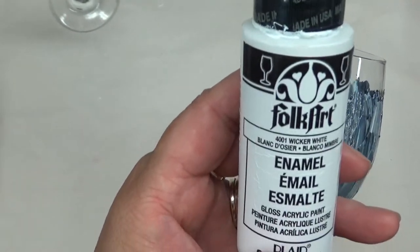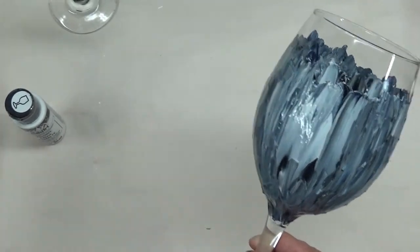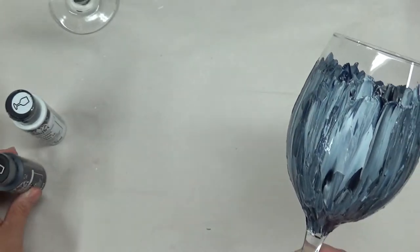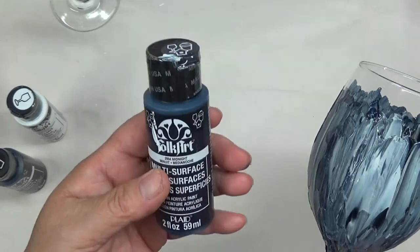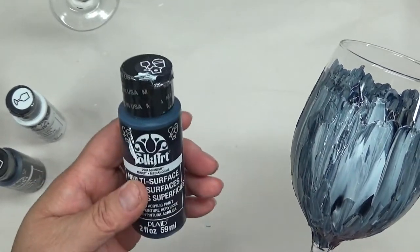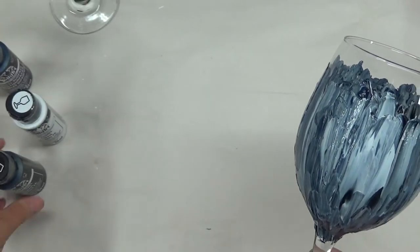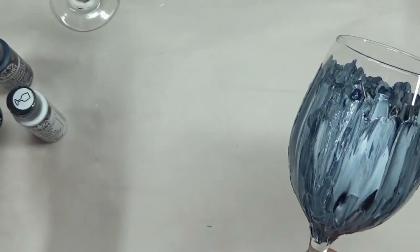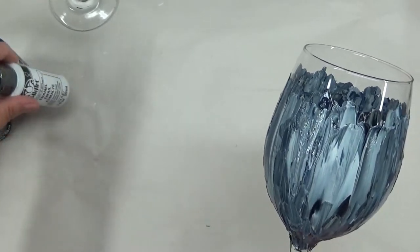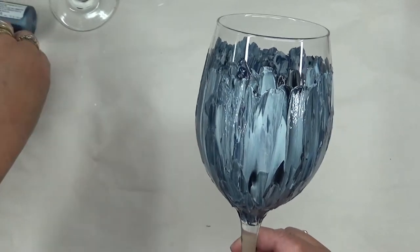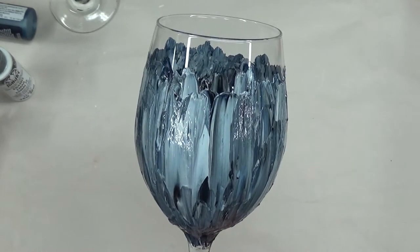I have this one looking in the opposite direction, and then I used Licorice and Midnight. This particular paint is the multi-surface Folk Art enamel. The other two are just the plain enamel paint. This product is created by Plaid, and that's what I'm going to be starting with. I'm going to be doing these glasses in parts.